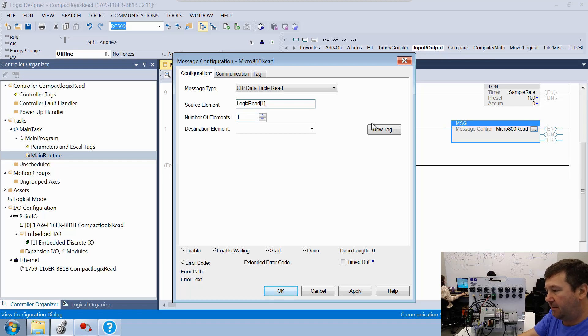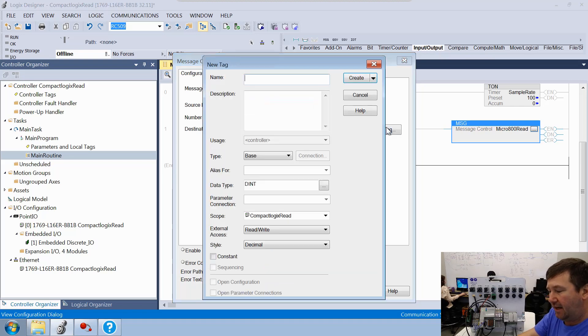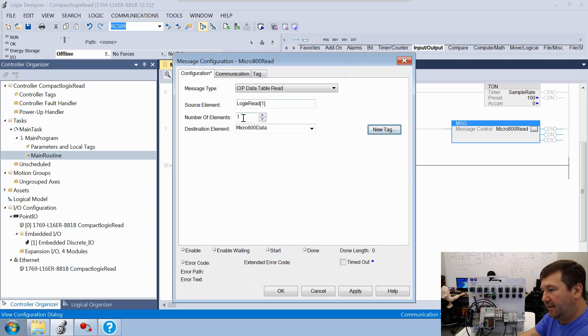For our destination, we'll actually need to create a tag for that. We'll call this our micro 800 data. And we will make it a double integer and a size of 10. Create. And then our number of elements will also be 10.